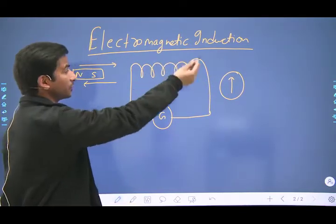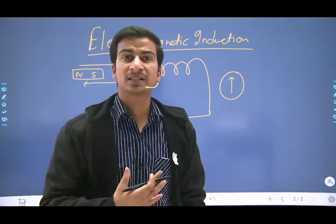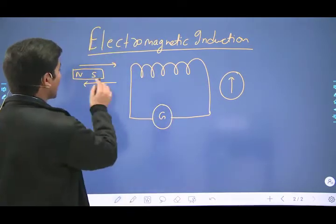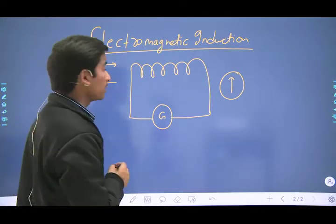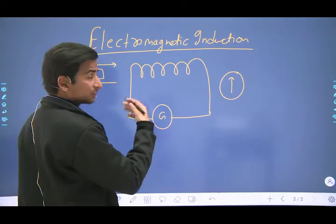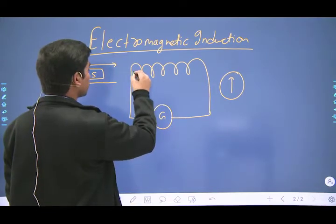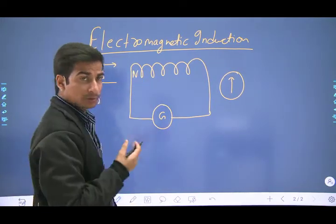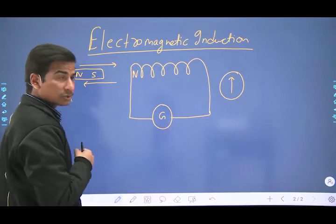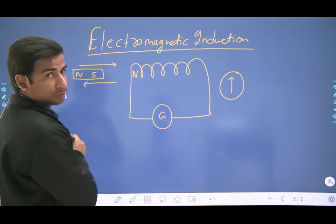Coil ke andar jo electrical current aap dekh rahe hain, woh basically us work se aata hai jo aapne is magnet ko move karne mein kiya hai. Suppose the current flows in such a way that this pole becomes north — it is just an assumption, it can also act like south; it depends on the motion of the magnet.